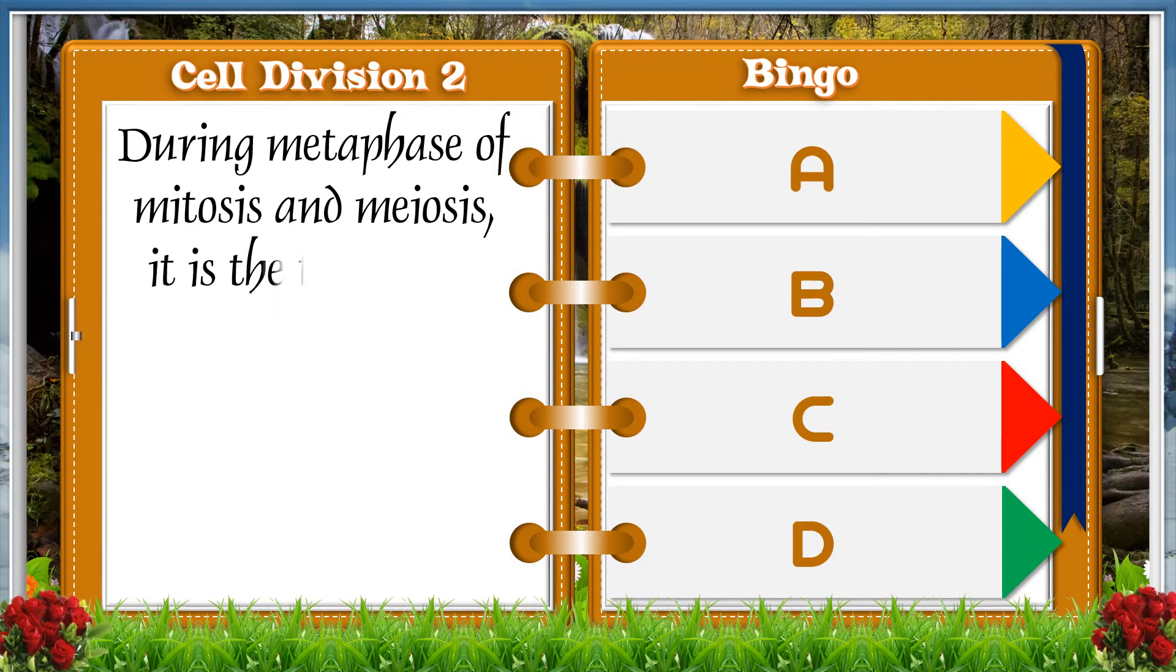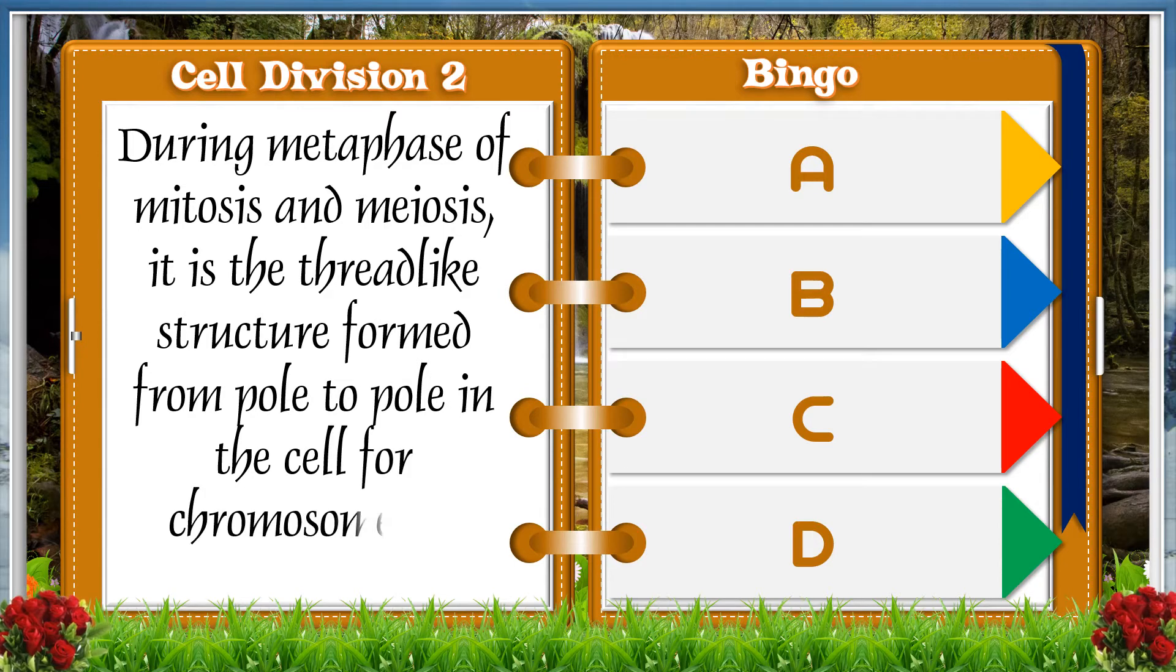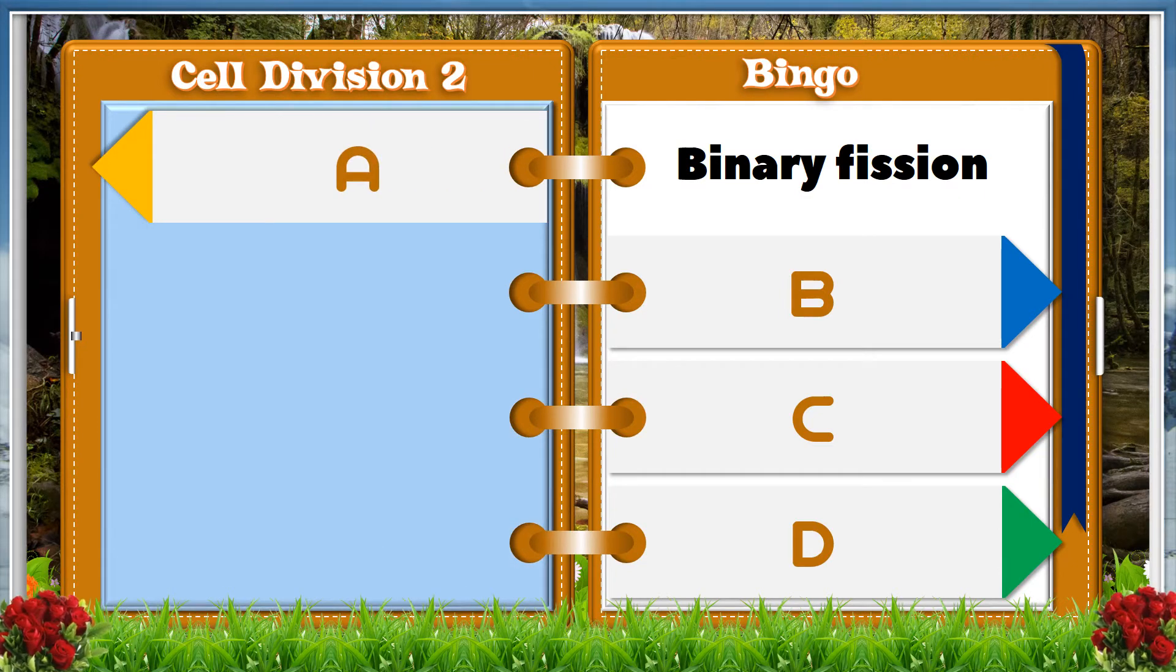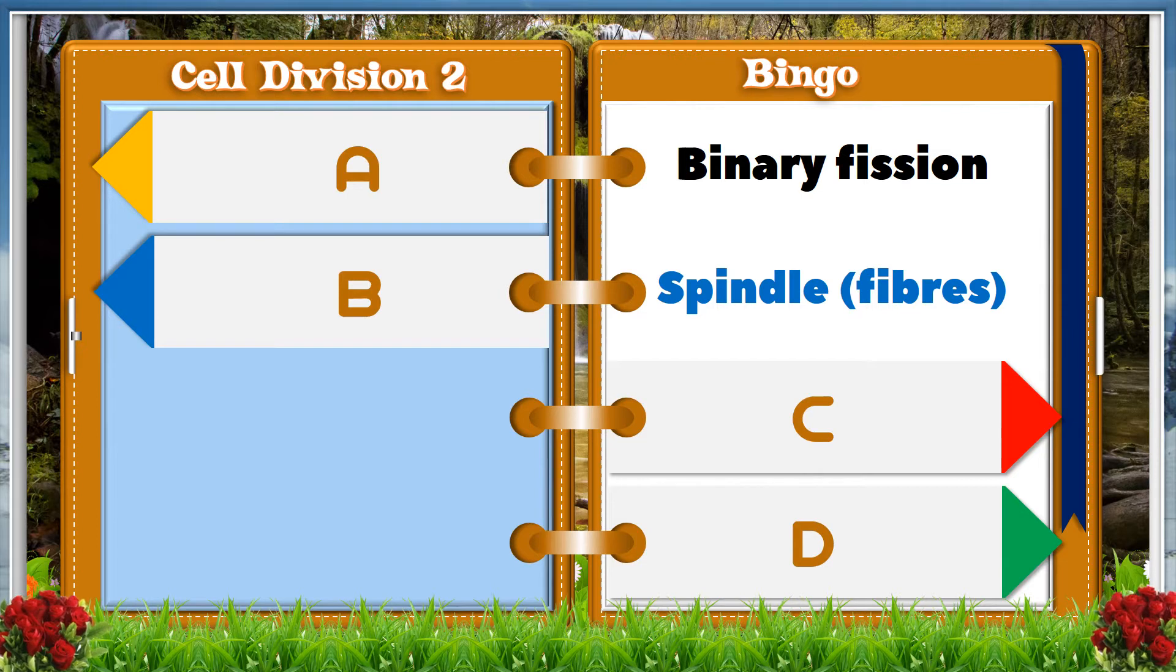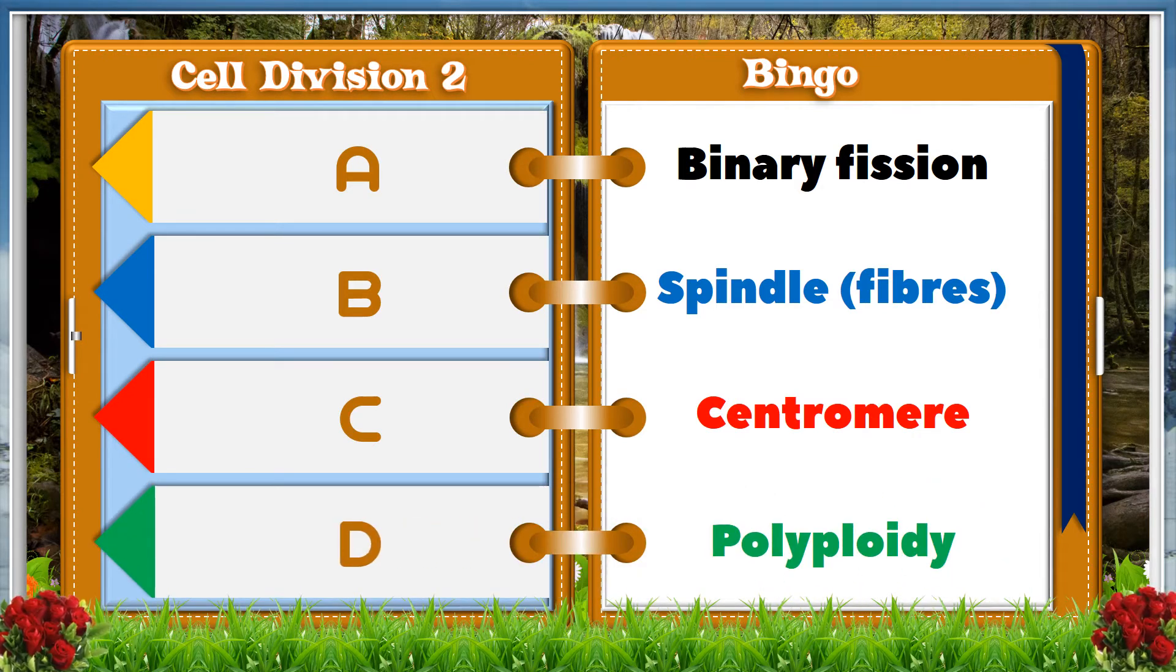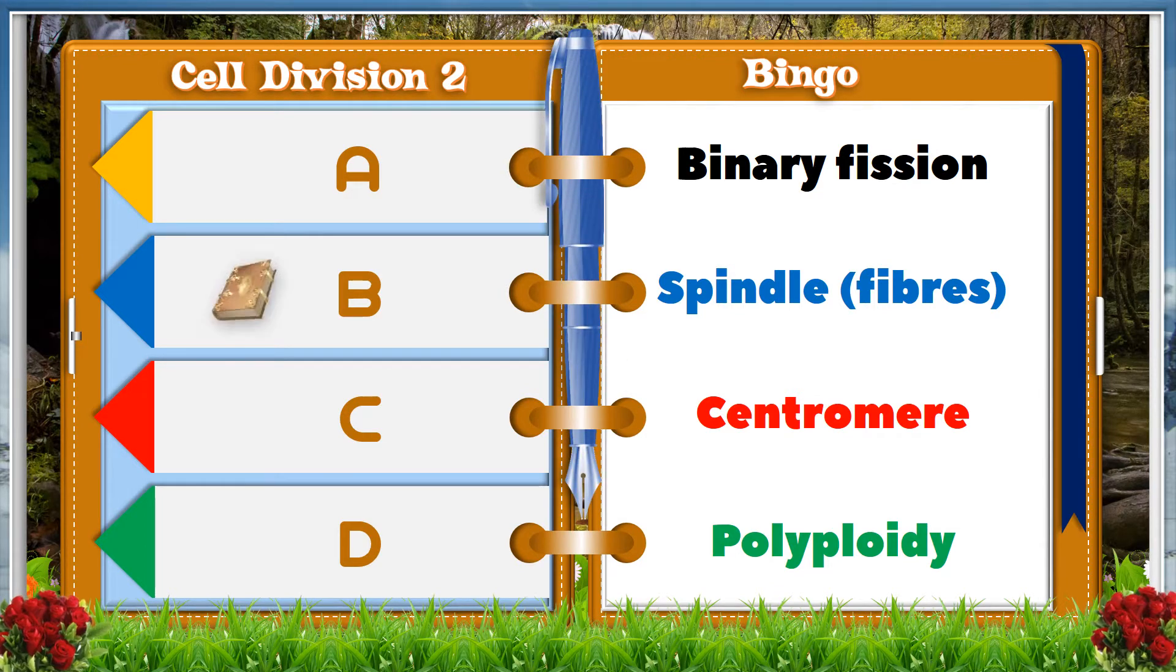During metaphase of mitosis and meiosis, it is the thread-like structure formed from pole to pole in the cell for chromosomes to become attached to. A: binary fission, B: spindle fibers, C: centromere, D: polyploid. And the answer is B, spindle fibers.